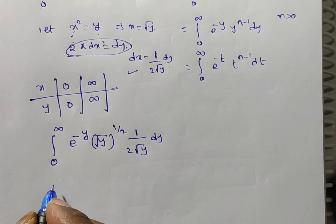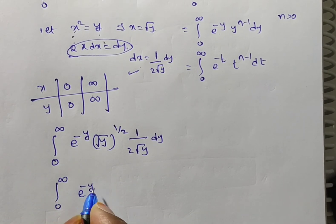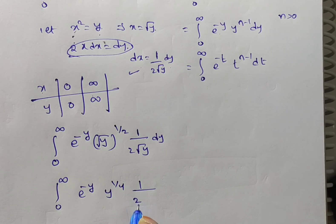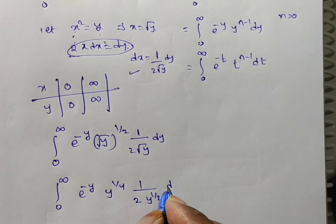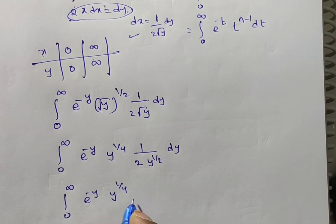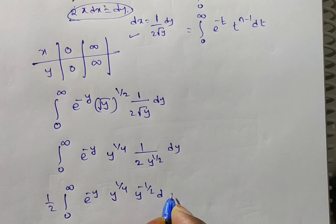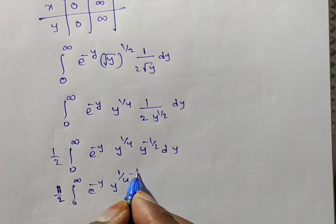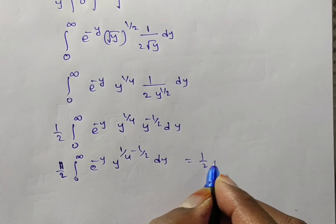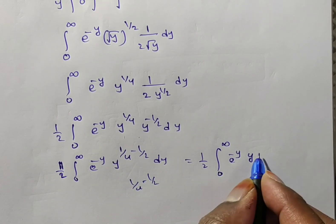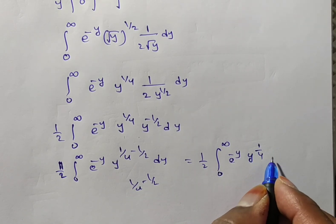Simplifying: we have integral from 0 to infinity of e to the power of minus y times y to the power 1 by 4 — since root y to the power 1 by 2 is y to the power 1 by 4 — times 1 by 2 times y to the power minus 1 by 2 dy. Outside we write 1 by 2. The bases are the same, so we add the powers: 1 by 4 minus 1 by 2. With common denominator 4, that gives 2 minus 1 over 4, which is minus 1 by 4.